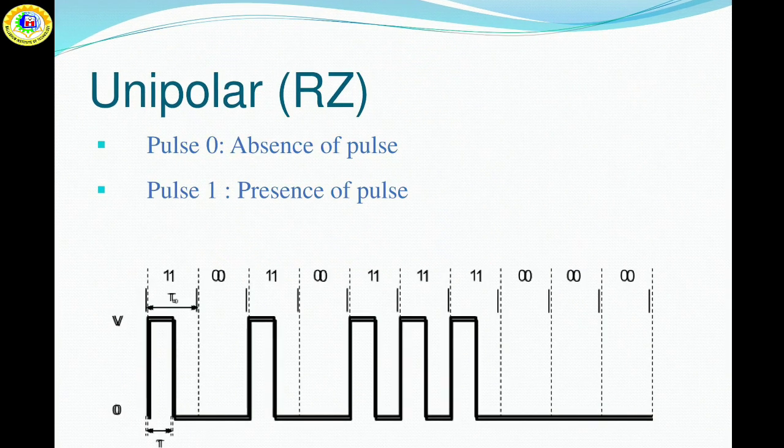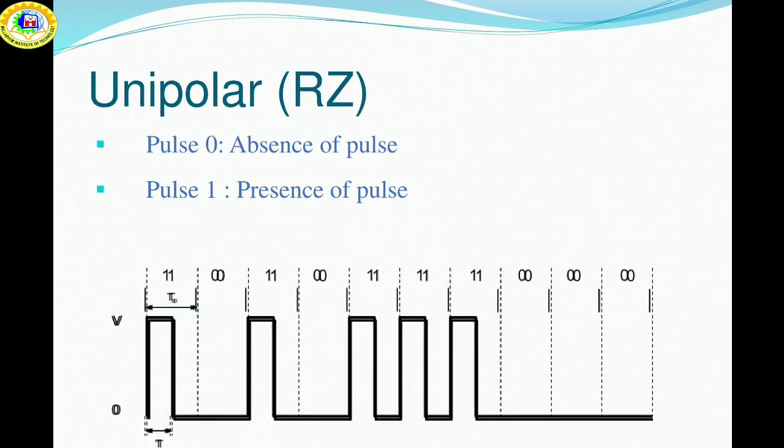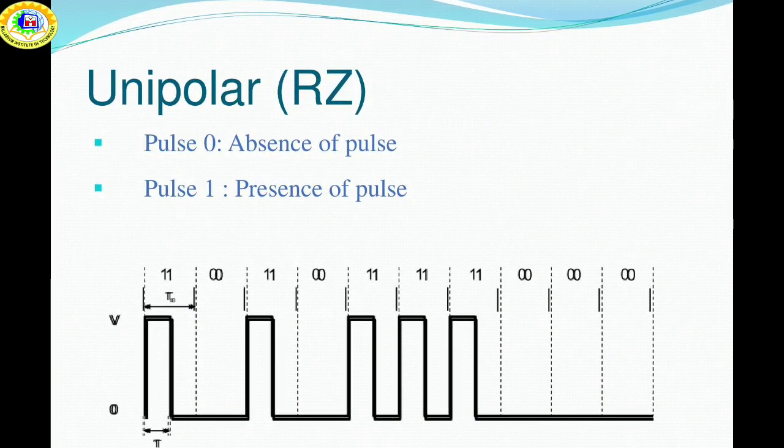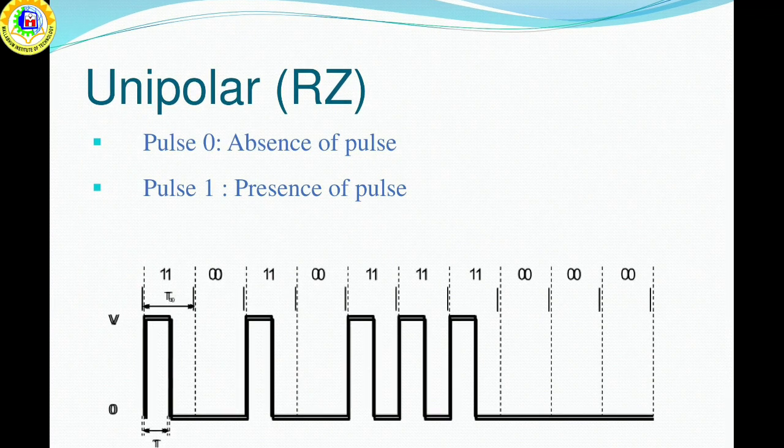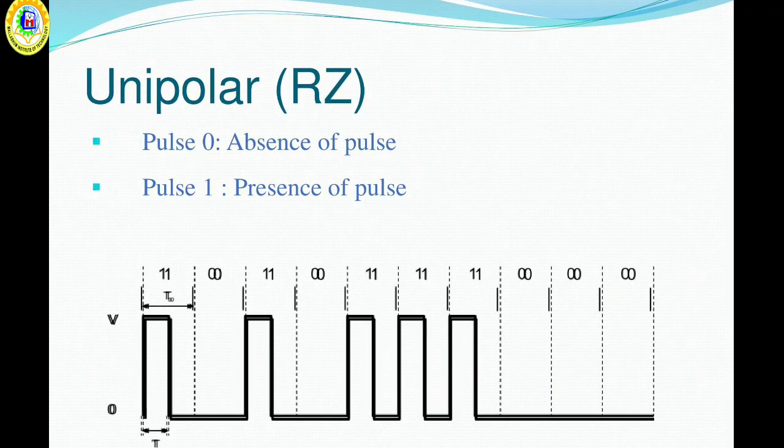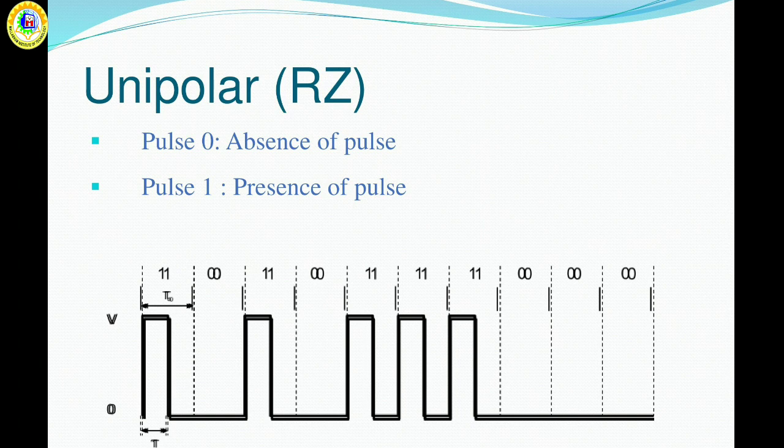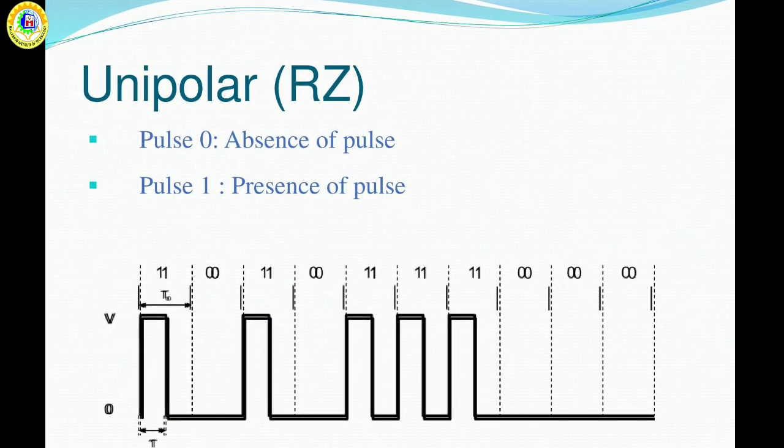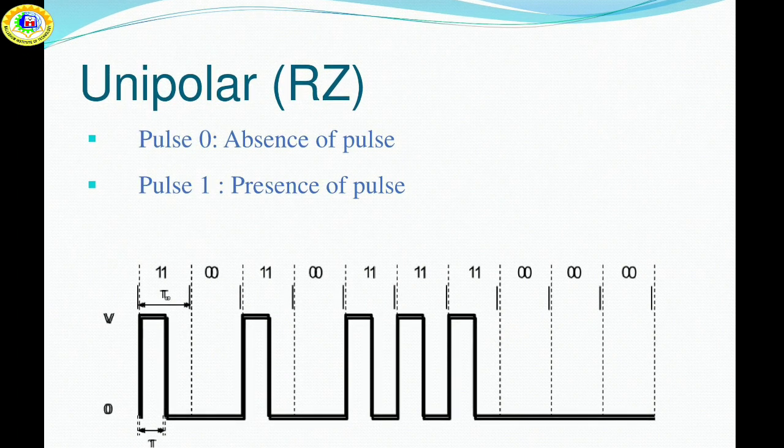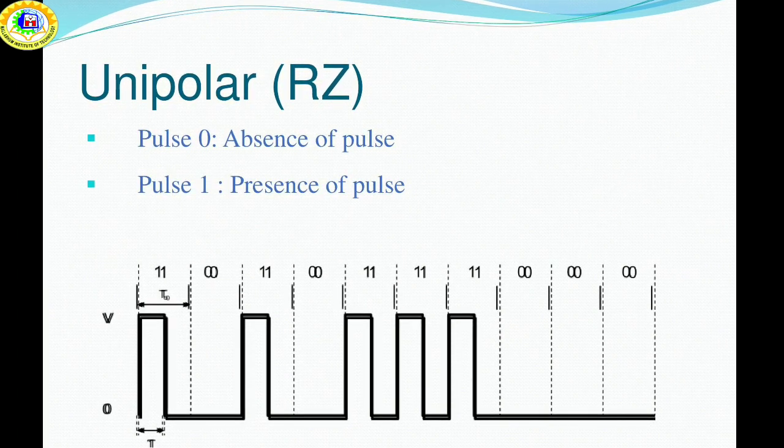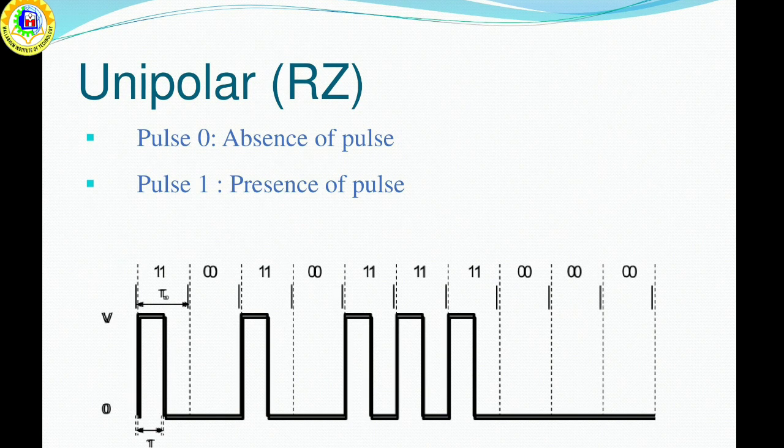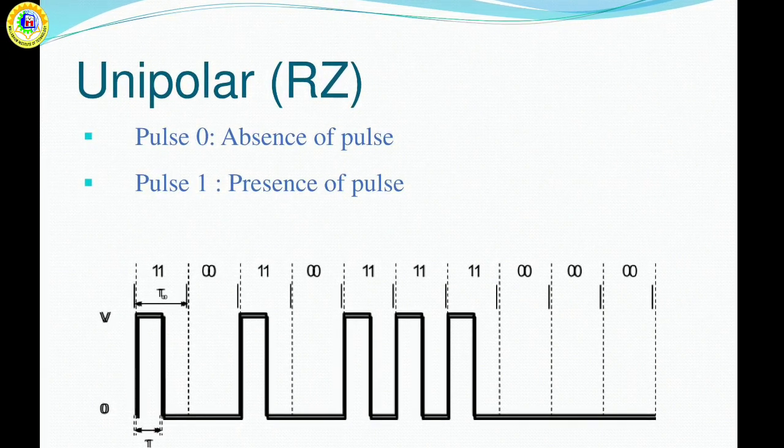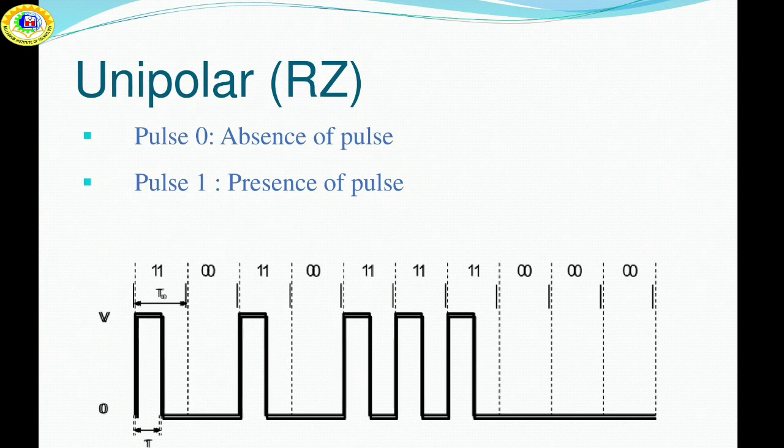It is clearly understood with the help of the following figure. Next, go to the unipolar return to zero. In this signaling, a high in data, though represented by a mark pulse, its duration T is less than the symbol bit duration. Half of the bit duration remains high, but it immediately returns to zero and shows the absence of pulse during the remaining half of the bit duration, which is clear in the figure.